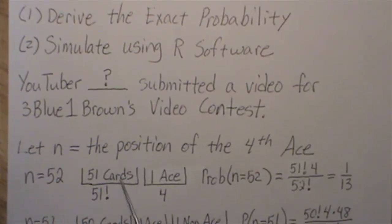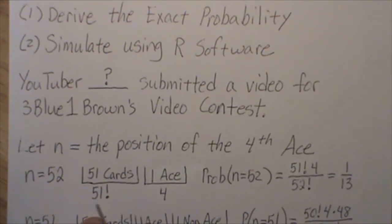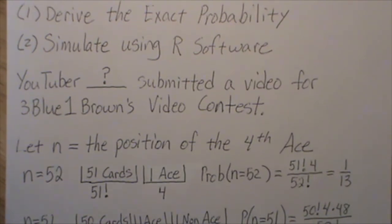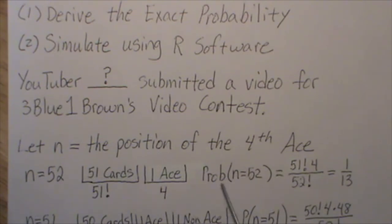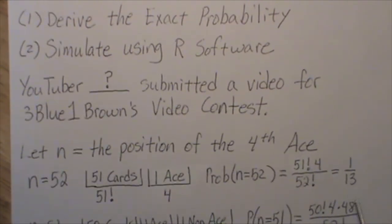In the first bin there are 51 cards. How many ways can you pick one ace? Well, there are four ways. How many ways can you arrange these 51 cards? Well, there are 51 factorial — the first card laid down you have 51 choices, then 50 ways to choose the second, 49 ways to choose the third, and so on. So the probability that N equals 52 is 51 factorial times 4, divided by the number of ways you can arrange 52 cards, which is 52 factorial.